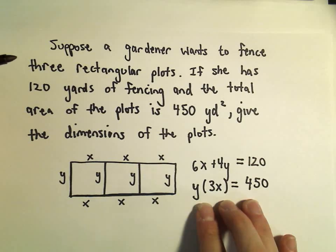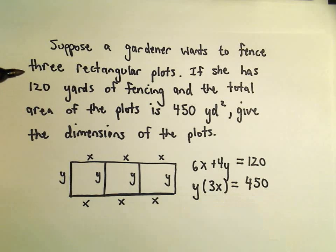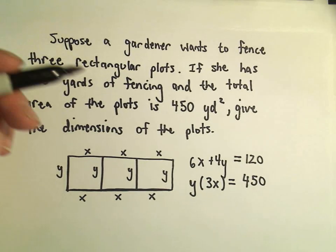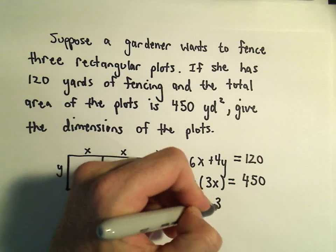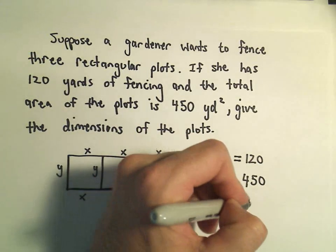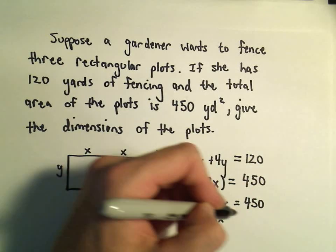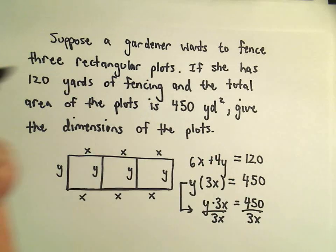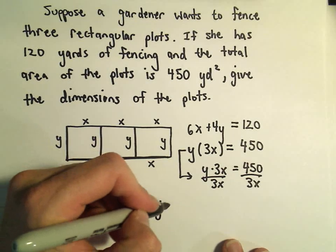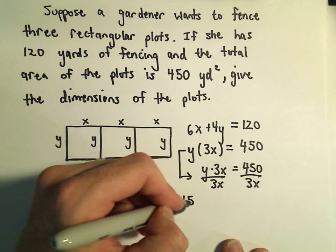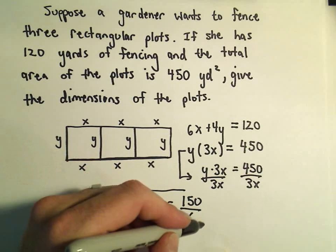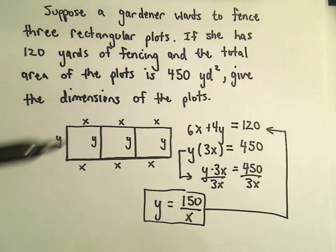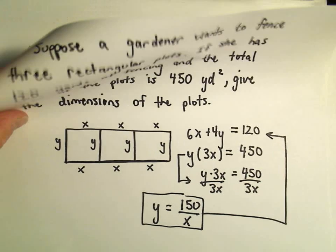So the second equation relates the total area of the plots. What I'm going to do is solve one equation — I'm going to divide both sides by 3x. On the left side, we'll simply be left with y. 450 divided by 3 is 150, but we still have the x in the denominator. So I'm going to take this value and substitute it into the first equation, giving me an equation involving only x that I'll be able to solve.